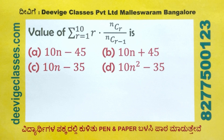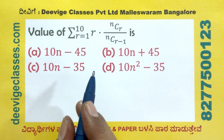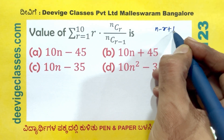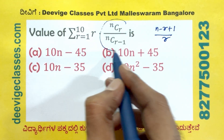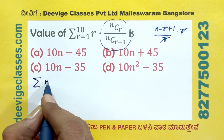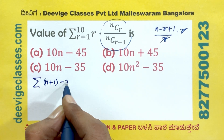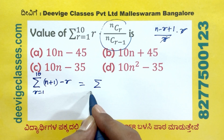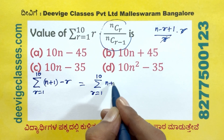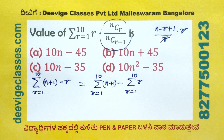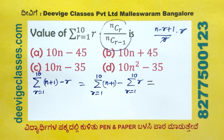The value of sigma r equals 1 to 10 of nCr divided by nCr minus 1, which is nCr by nCr minus 1, that is n minus r plus 1 divided by r. The r cancels, so what we need is summation of n plus 1 minus r, for r equal to 1 to 10.